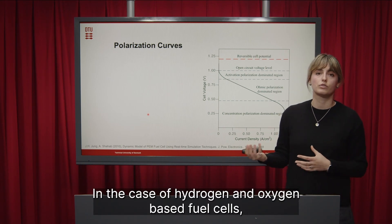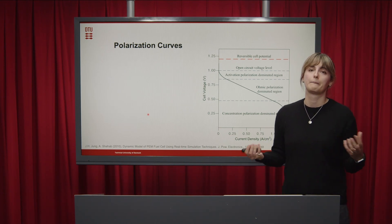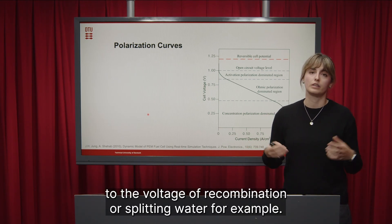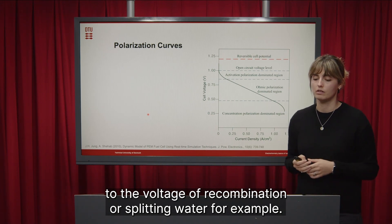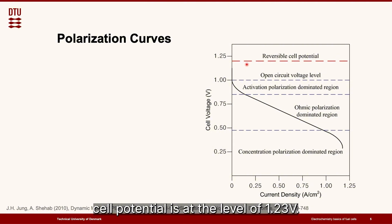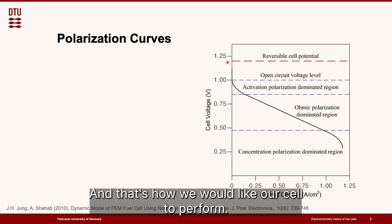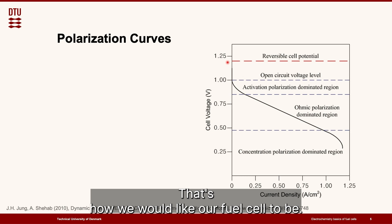In the case of hydrogen and oxygen-based fuel cells it would be 1.23 volts which is equal to the voltage of recombination or splitting water for example. So in this case as you can see our reversible cell potential is at the level of 1.23 volts and this is exactly the ideal scenario where we don't have any losses, we don't have any external influences and that's how we would like our cell to perform. That's how we would like our fuel cell to be.